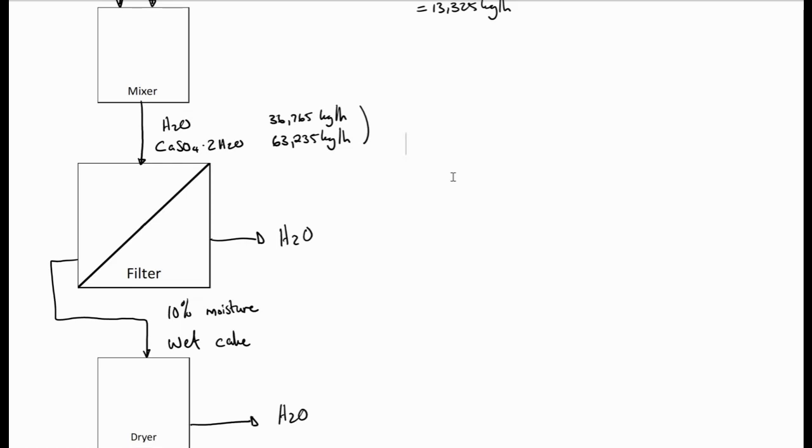What do we know? All the calcium sulfate dihydrate going to the filter is leaving as filter cake, plus an additional 10% as water trapped around this calcium sulfate crystals. This implies that 90% of that stream is calcium sulfate dihydrate. And we know that this must be equal to 63.235 kilograms per hour. So our total stream would be 63.235 over 0.9, which will be equal to 70.261 kilograms per hour. And the difference between the 70 and the 63 must be my water, which equals to 7.026, where you can see one-tenth of that kilograms per hour.